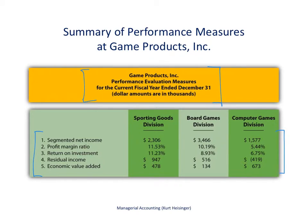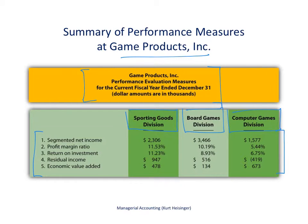Please take a look at those videos if you want to see where these numbers come from. This is simply a summary of all that information. Our company is Game Products Inc., and we have three different divisions: the sporting goods division, the board games division, and the computer games division. Each of these divisions is considered an investment center, and these are the resulting calculations related to each of these divisions.